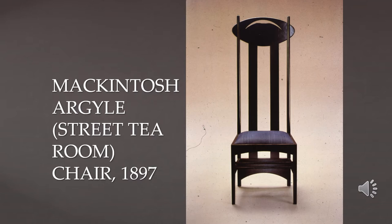This chair with its high back was the first time Mackintosh experimented with his trademark high-back chair design. You can see the play of curves against straight verticals. This chair from 1897 is from the Argyle Street Tea Room, where he was hired to design the furniture. After this one he was able to design two more tea rooms for Miss Cranston. The Argyle Street Tea Room chair is the precursor to the Hill House Chair Number Three and others seen in previous slides.